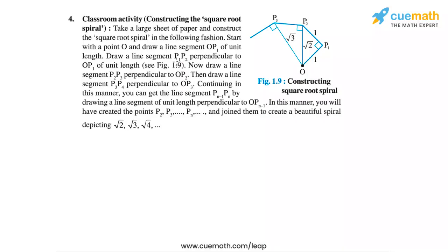In question 4 of this exercise we have to do an interesting construction activity. The question says take a large sheet of paper and construct the square root spiral in the following fashion. Start with the point O and draw a line segment OP1 of unit length, so here's our first segment OP1 which is of unit length.